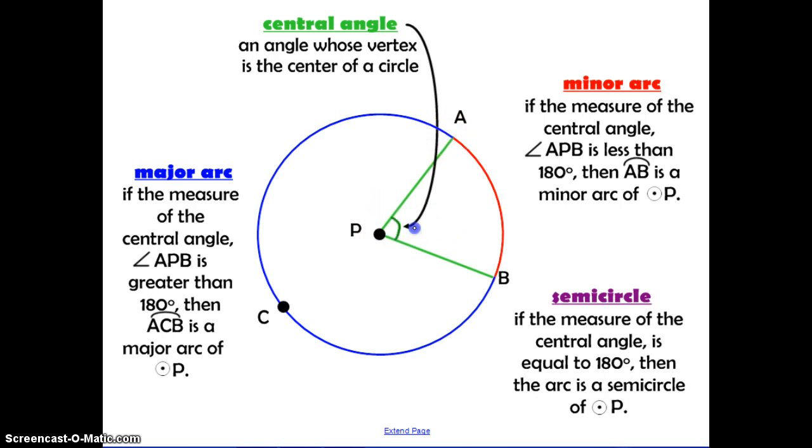This is the measure of the central angle. Now whenever you have an angle inside of a circle, it cuts off a portion of the edge of the circle. That is called an arc. A minor arc is referred to an arc if the measure of that central angle that cuts it off is less than 180 degrees. So AB is called a minor arc of circle P.